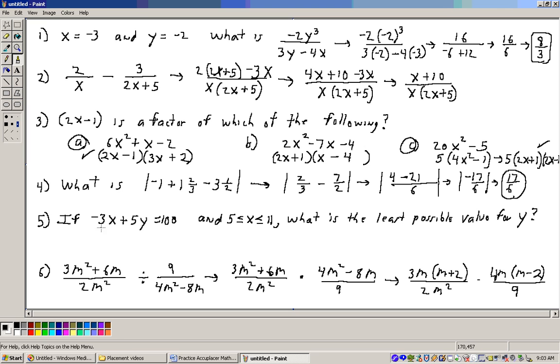We can try it. Let me put in a 5 for x. If I put 5 in there, that would be negative 3 times 5 plus 5y equals 100. That's negative 15. If I add 15 to both sides, I get 5y equals 115, and divide through by 5 and I get 23. If I try a bigger value in here for x, I'll get a bigger value for y.